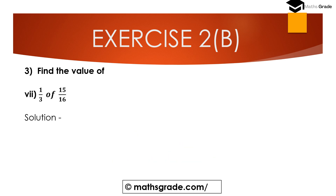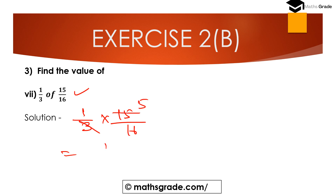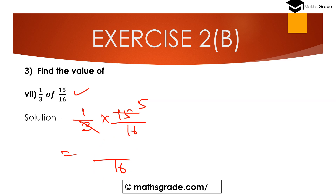Question number 7th part: 1 divided by 3 of 15 divided by 16. So multiply 1/3 by 15/16 — 3 cancels with 15, as 3 fives are 15, giving 5 divided by 16. The value of 1/3 of 15/16 is 5/16.